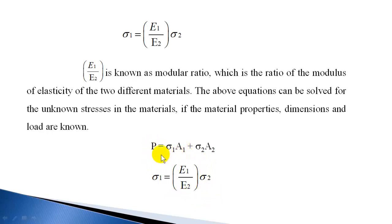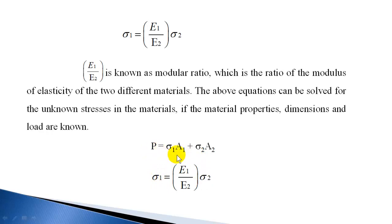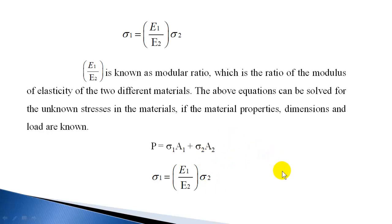The total load taken by the composite bar equals sigma1 × A1 + sigma2 × A2, and stress in bar one equals (E1/E2) × sigma2. To find stresses sigma1 and sigma2, you need to know the total load, the cross-sectional areas of both materials, and the Young's modulus of both materials. With that information, you can solve for the stresses induced in both materials.